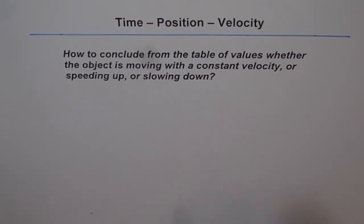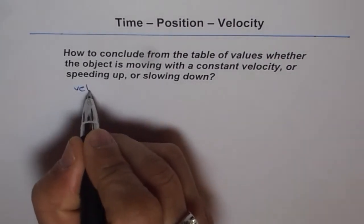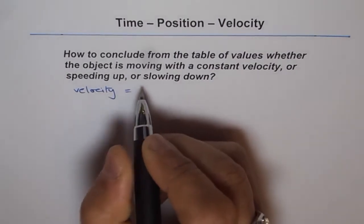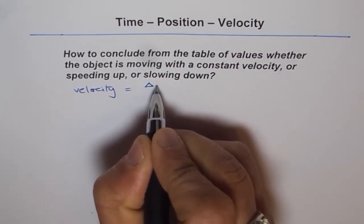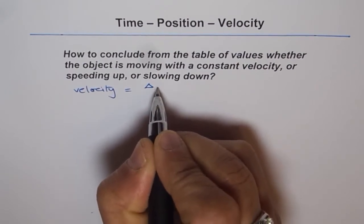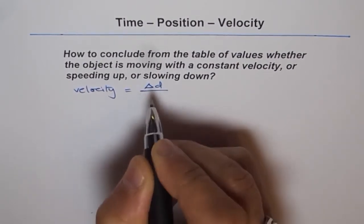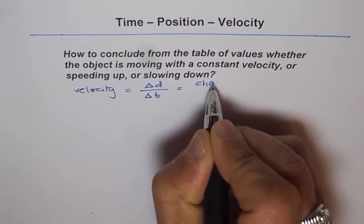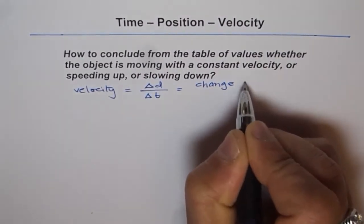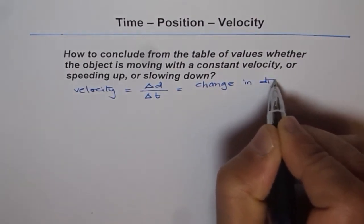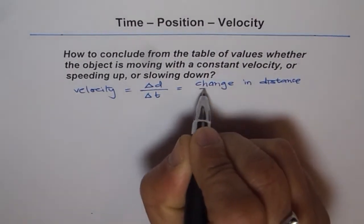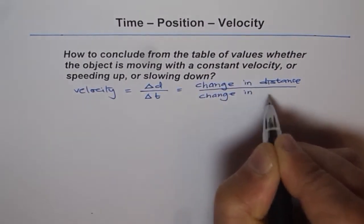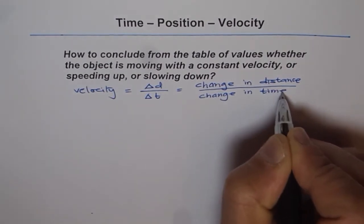So what is velocity after all? Velocity is the rate of change of position with time. We can write it as: change in distance over change in time. That is what velocity is.